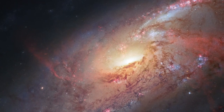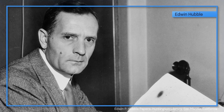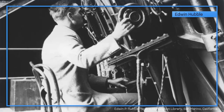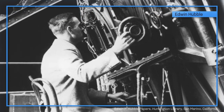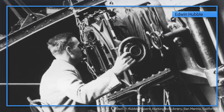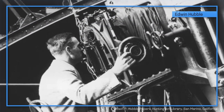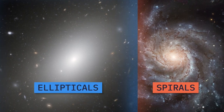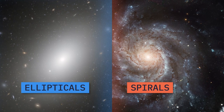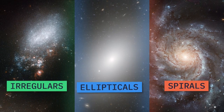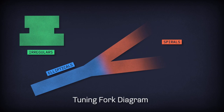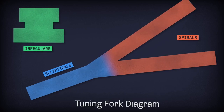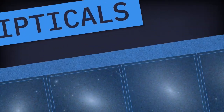Hubble's namesake, astronomer Edwin Hubble, pioneered the study of galaxies based simply on their appearance. He divided galaxies into three basic forms: ellipticals, spirals, and irregulars. Labeled the tuning fork diagram, Edwin Hubble's basic arrangement is still in use today.